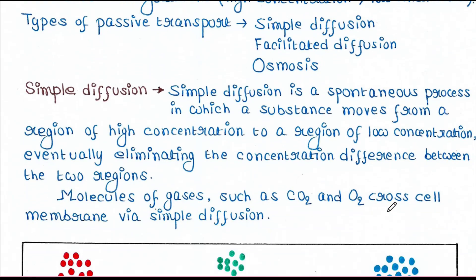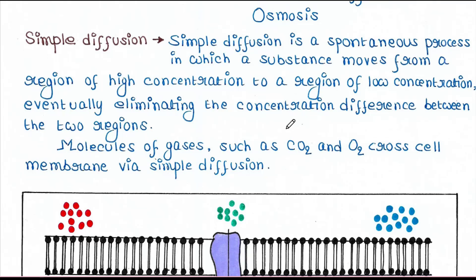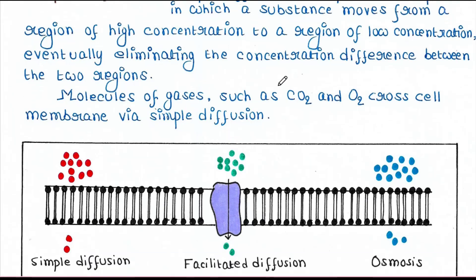Simple diffusion is a spontaneous process in which a substance moves from a region of high concentration to a region of low concentration, eventually eliminating the concentration difference between the two regions.